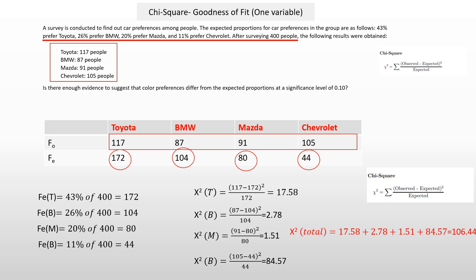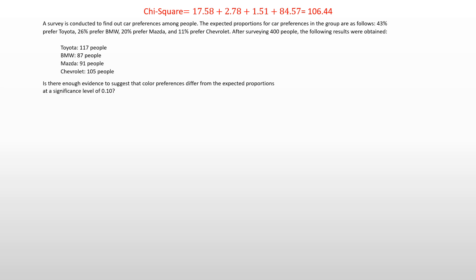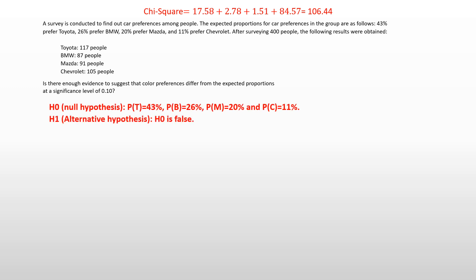Getting that chi-square value of 106.44 earns about 75% of the marks if it's an exam question, but you're not done yet — you have to interpret what that value means. Referring back to the hypothesis, when doing hypothesis testing you pick one answer: either accept that proportions are 43%, 26%, etc., or reject that and say they're distributed differently. You decide which one based on the math.